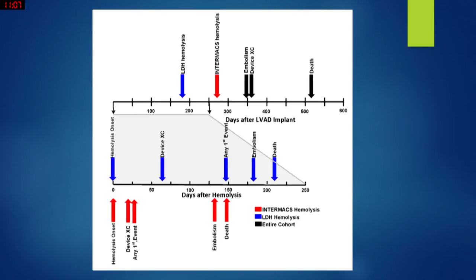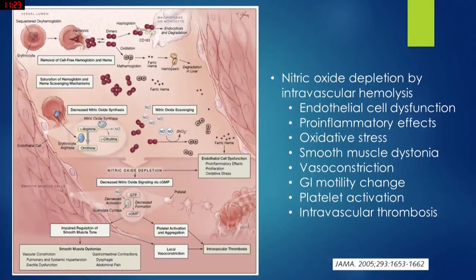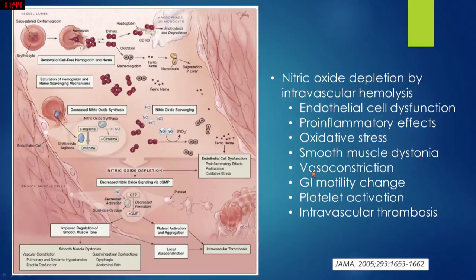Pump thrombosis may cause stroke, embolization, and require a risky device exchange surgery with terrible outcomes. Hemolysis is also a systemic condition: it causes nitric oxide depletion, leading to endothelial dysfunction, pro-inflammatory effects, oxidative stress, smooth muscle dystonia causing generalized vasoconstriction, GI motility changes, and platelet activation resulting in intravascular thrombosis.